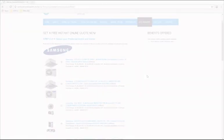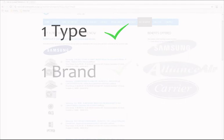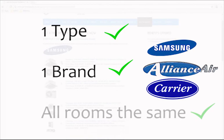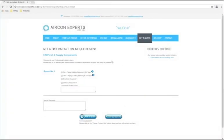Please note that only one type of air conditioner can be selected. So for instance, if you choose a Midwall split type air conditioner, your quotation will be calculated with all rooms having Midwall split type machines installed.